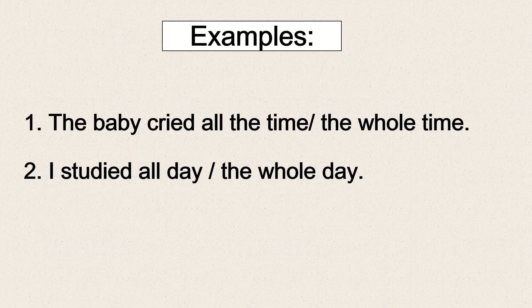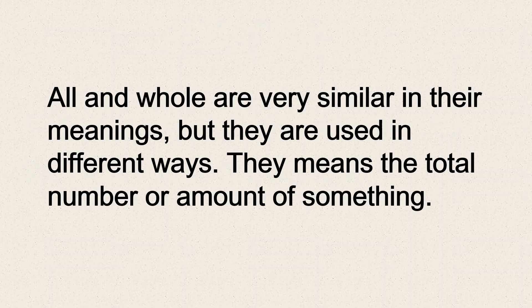Going back to the baby example: 'the baby cried all the time' means the baby was weeping and stopping, weeping and stopping — for example during a two or three hour trip. But 'the baby cried the whole time' means the baby started crying and never stopped — it was continuous crying. So 'all' and 'whole' are very similar in meaning but used differently.